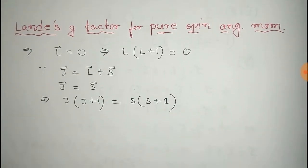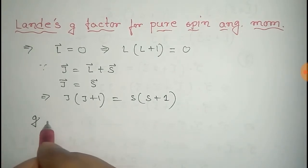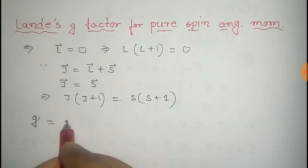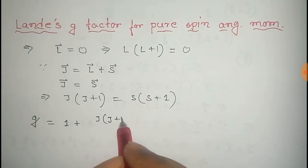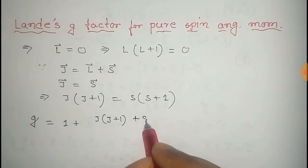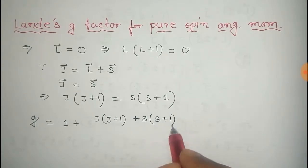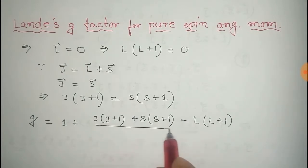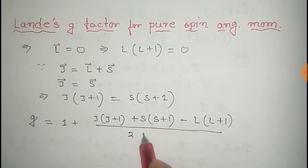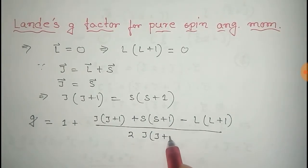Now from the expression of Landé g-factor G, we get G equals to 1 plus J into J plus 1, plus S into S plus 1 minus L into L plus 1, divided by twice J into J plus 1.